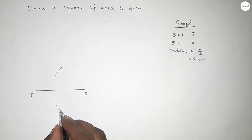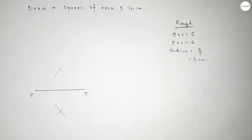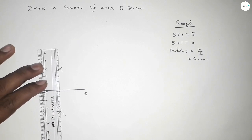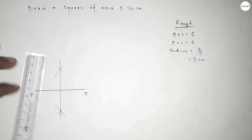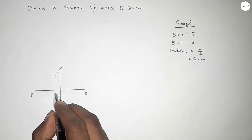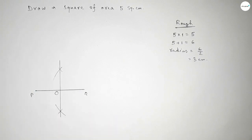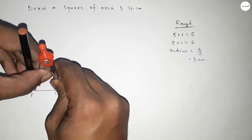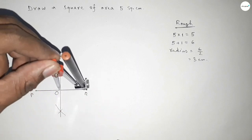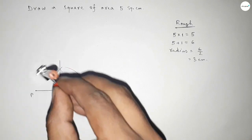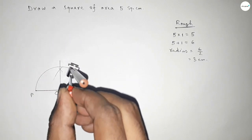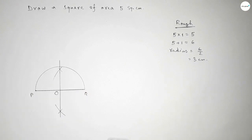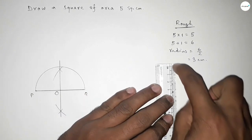Putting the compass here and cutting here. Now both the curves intersect at two points. Joining these two points, which intersect at a point. By bisection, we get midpoint O. Now taking the length OP and OQ to draw a semicircle by this way.